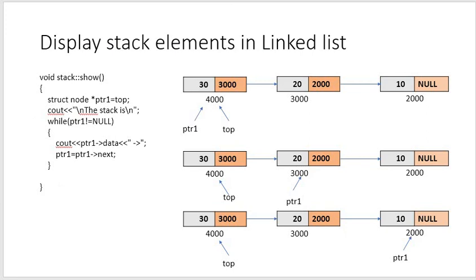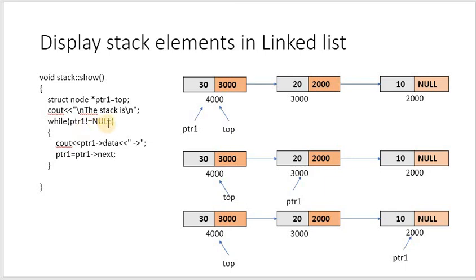This is the display function for showing elements in the stack — it will display them in reverse order. We take a pointer ptr and assign it to top, because the last element will have the top reference. We then check whether ptr is null or not. If ptr equals null there is no element to show. We check: ptr is equal to 4000, which is not equal to null — true — so we proceed.